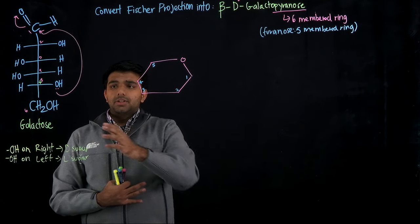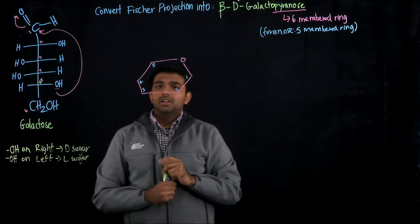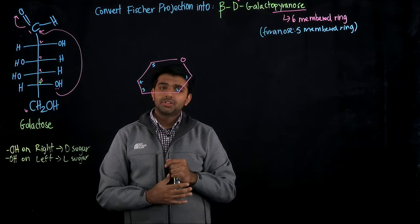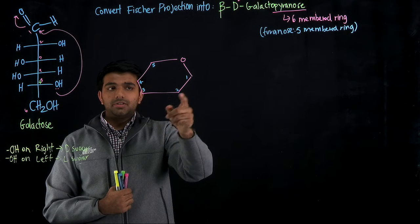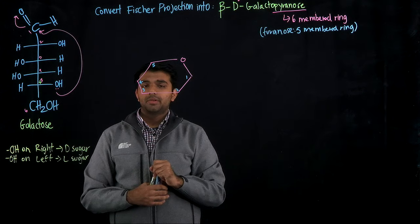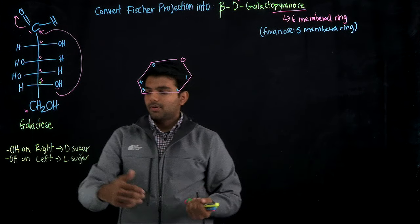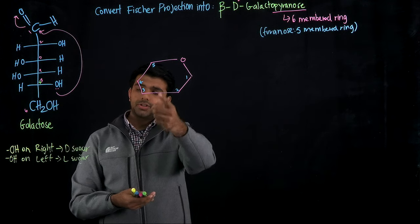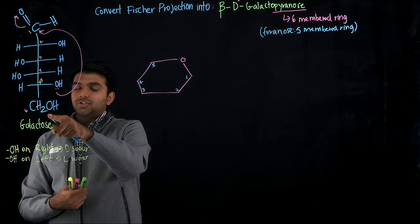The way to tell on your Haworth whether it's a D or L sugar is based on the substituent on carbon number five. If the substituent on carbon five is pointing up, then regardless of where all the other substituents are, you know it's a D sugar. If it's pointing down, it's an L sugar. Since we've already determined this galactose Fischer is given in the D form, we'll draw our substituent — the CH₂OH group — going up.